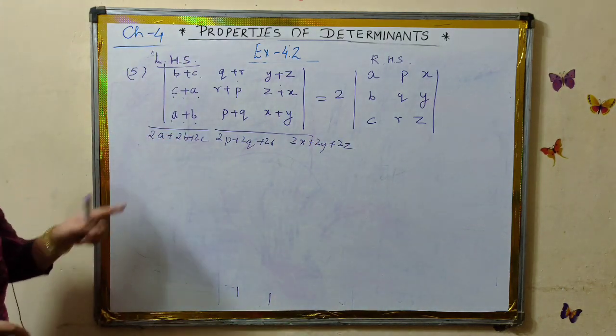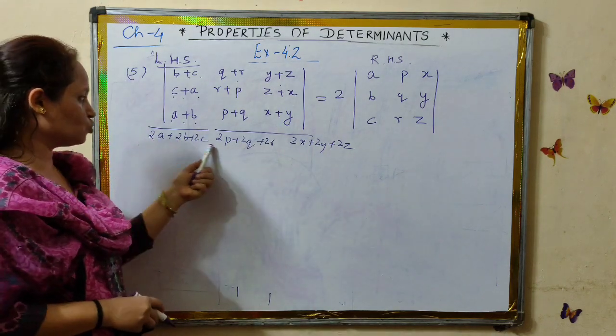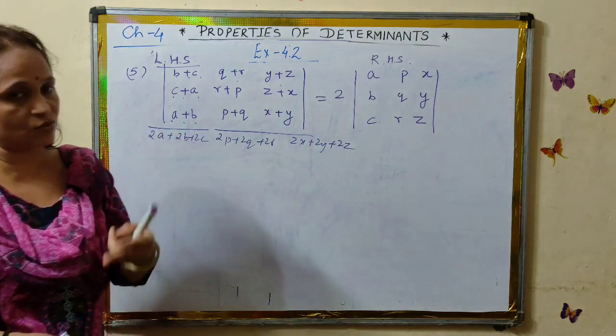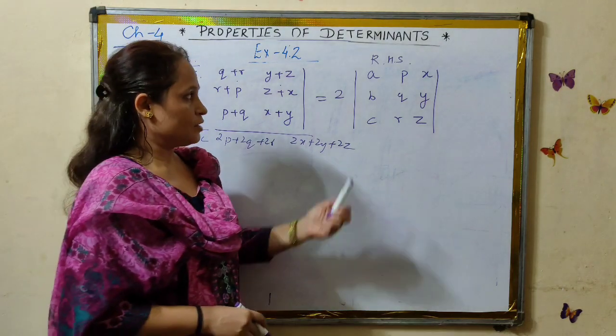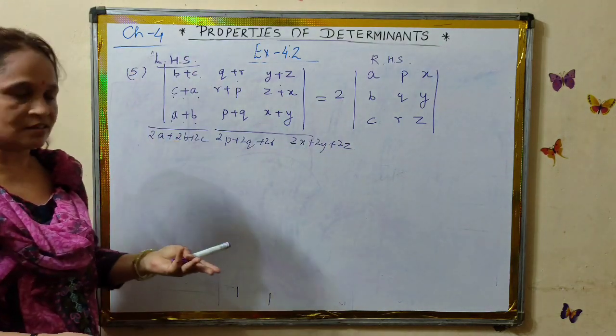Then we add all the three rows. You see, these are the terms that we will get in row 1. The common factor is 2 throughout. We can take it outside the determinant. In the next step, 2 is a common factor. They are also on the right side. So we can begin an answer with this approach.